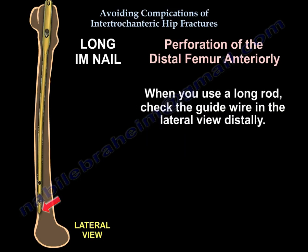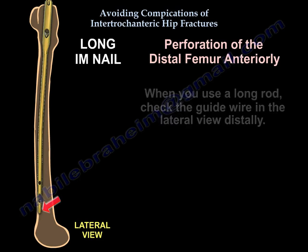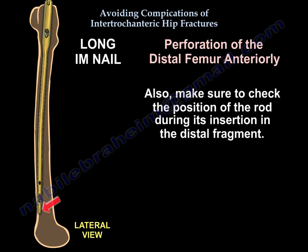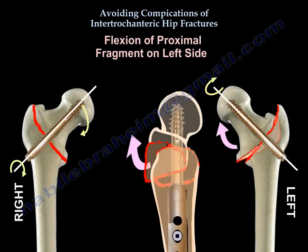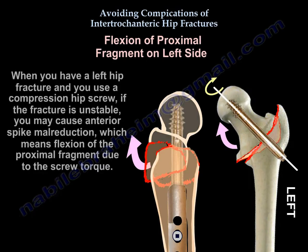When using a long rod, check the guide wire in the lateral view distally, and make sure you check the position of the rod during insertion in the distal fragment. Another complication is flexion of the proximal fragment. When you have a left hip fracture and use a compression hip screw in an unstable fracture, you may cause anterior spike mal-reduction — meaning flexion of the proximal fragment due to the screw torque.